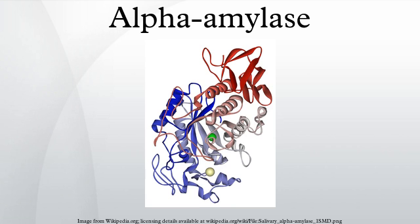In contrast, a Bayaka individual carried six copies. The Bayaka are rainforest hunter-gatherers who have traditionally consumed a low starch diet. Perry and colleagues speculated that the increased copy number of the salivary amylase gene may have enhanced survival coincident to a shift to a starchy diet during human evolution.